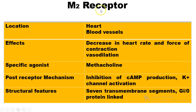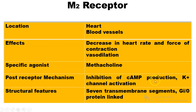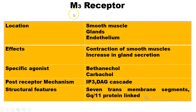Next are M2 receptors, located in the heart and blood vessels. The effects of M2 receptors include decreasing heart rate and force of contraction, and also causing vasodilation. The specific agonist of M2 receptors is methacholine. The post-receptor mechanism involves inhibition of cyclic AMP production and potassium channel activation. The structural features include 7 transmembrane segments and a Gi protein link.